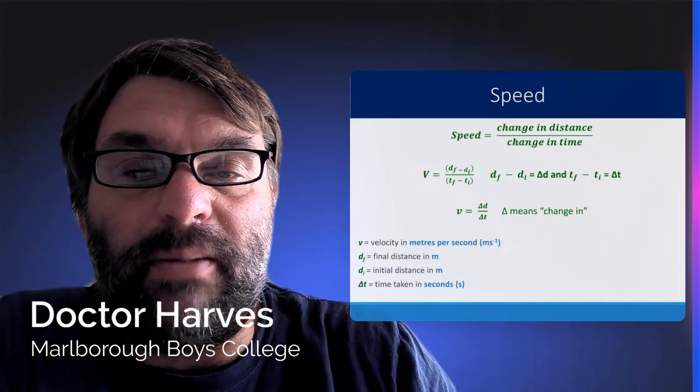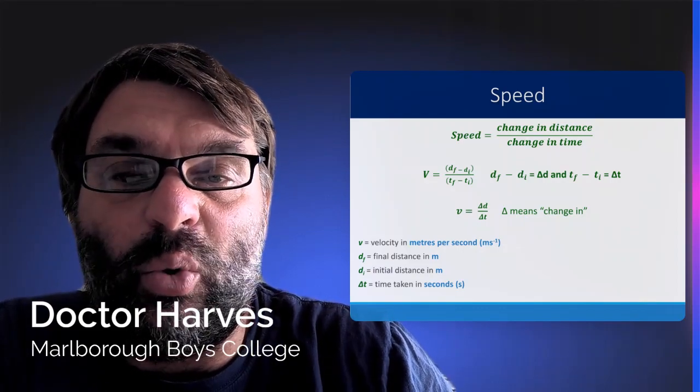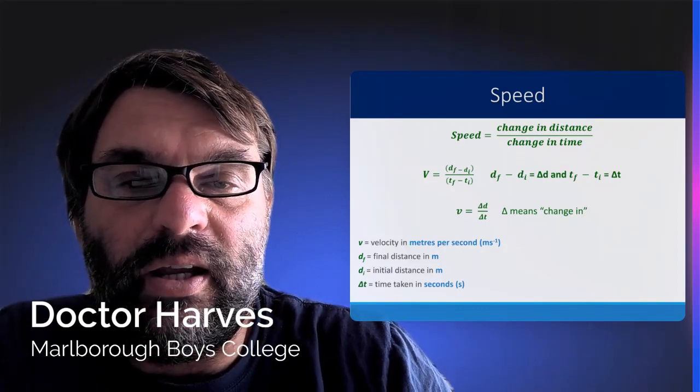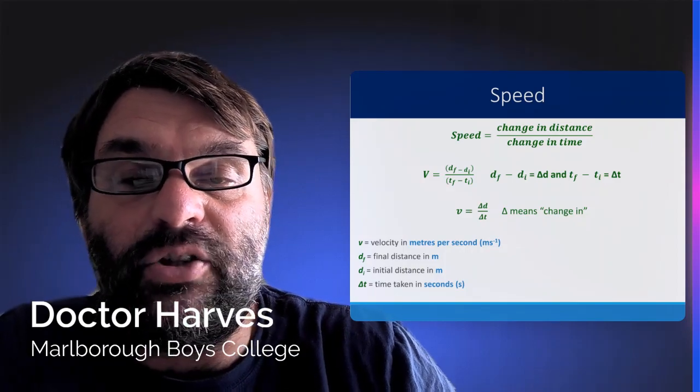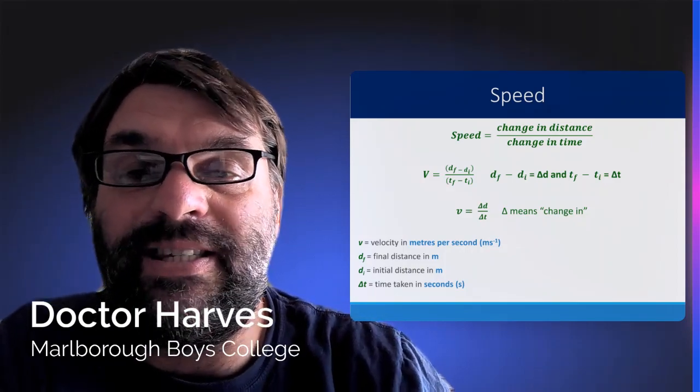The final distance is measured in meters, the initial distance also in meters, and the delta t is the change in time measured in seconds.